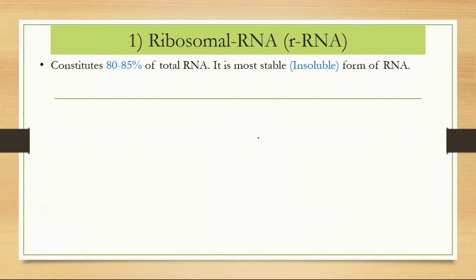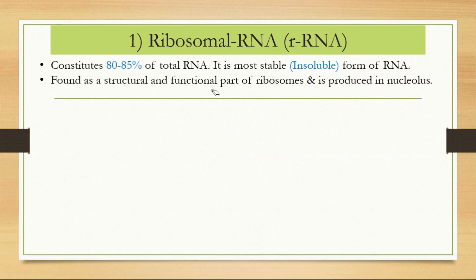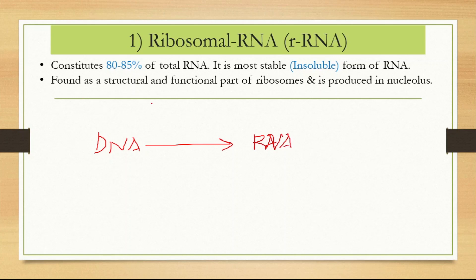The ribosome has a large subunit and a small subunit made of rRNA and protein. rRNA is produced in the nucleolus — the dense region within the nucleus. All RNA, including rRNA, is made from DNA by the process of transcription. So rRNA is transcribed from DNA in the nucleus — specifically in the nucleolus — and it forms the basic structural and functional unit of the ribosome.